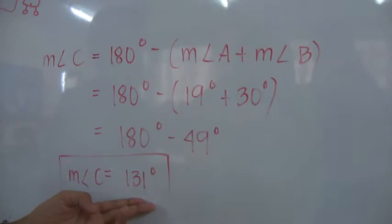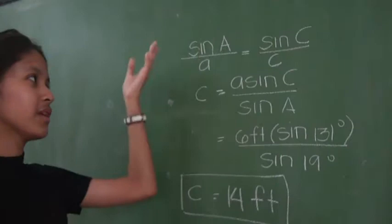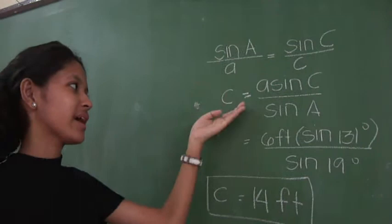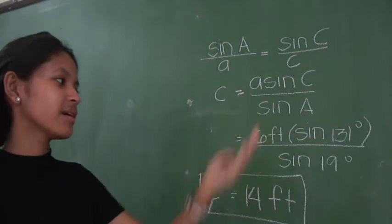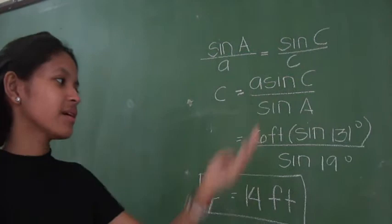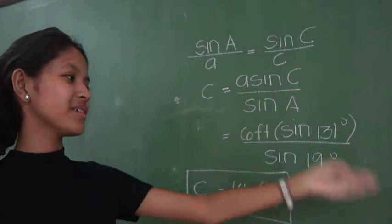we use the law of sines. With the use of cross multiplication, we derive the formula to solve for side C. Thus, C is equal to A times sine C over sine A. Substitute the values. 6 feet times sine 131 degrees divided by sine 19 degrees is equal to 14 feet. The value of side C is 14 feet.